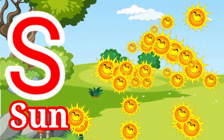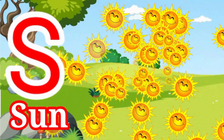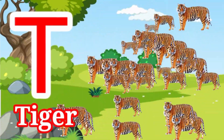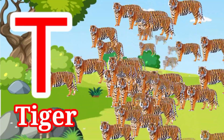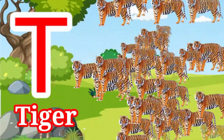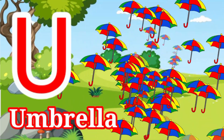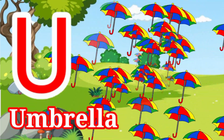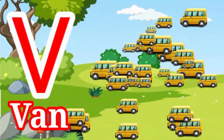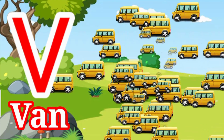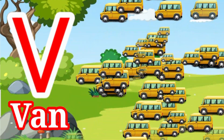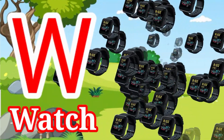S for sun. T for tiger. U for umbrella. V for van.